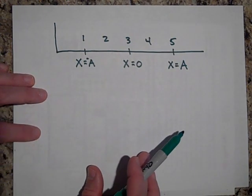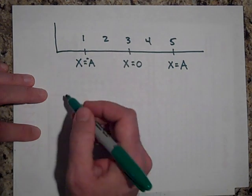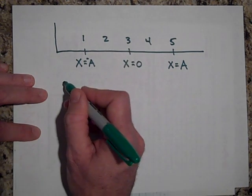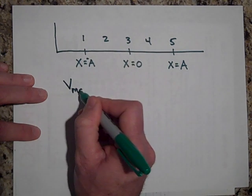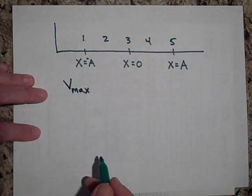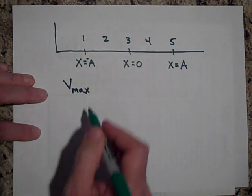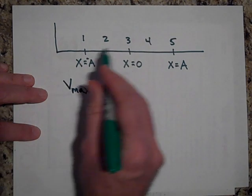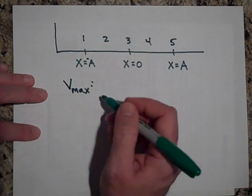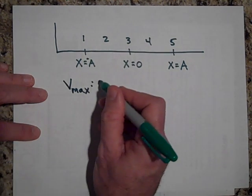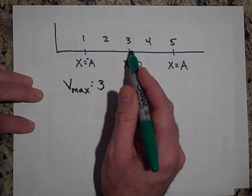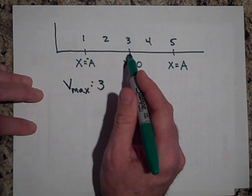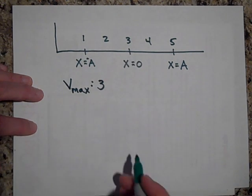Can you tell me where the object is going to have its maximum positive speed? Which of these numbers? It is 3. That's where the spring will be completely unstretched, so there will be no elastic potential energy, so all the energy will be in the form of kinetic.